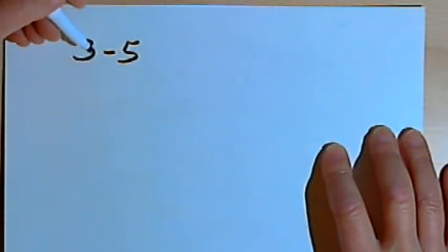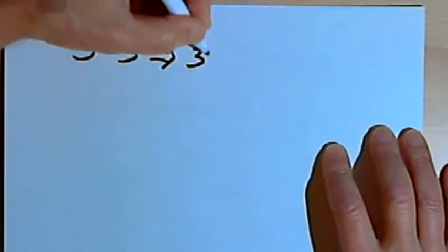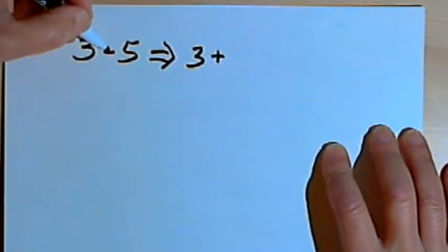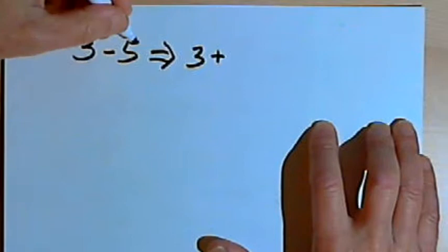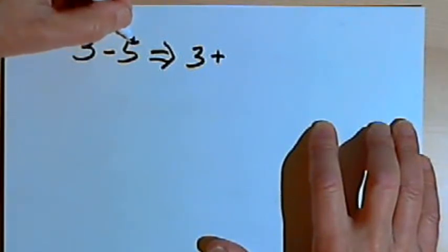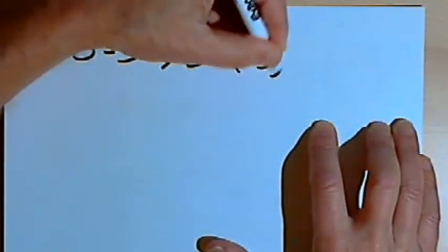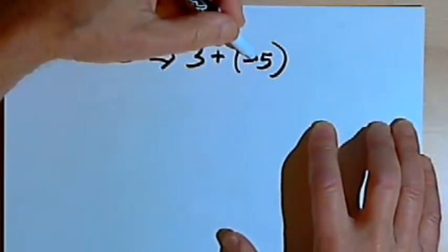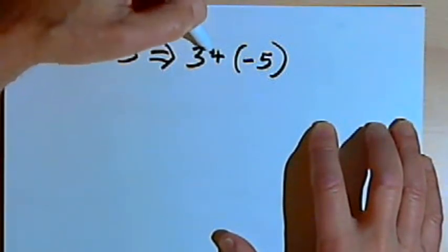Here's how this is going to work. I'm going to take 3 minus 5 and turn it into an addition problem: 3 plus negative 5. I've taken the opposite of the subtraction operation, and to compensate I take the opposite of the number I'm subtracting — I was subtracting 5, so now I'm adding negative 5.